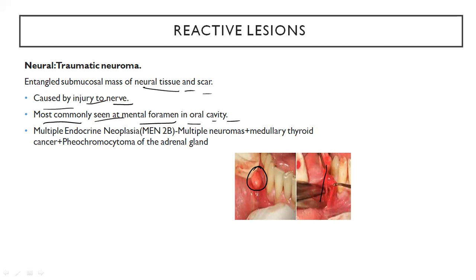What is multiple endocrine neoplasia? This is a type of condition where you see multiple neuromas along with medullary thyroid cancer and pheochromocytoma of the adrenal gland — all together constituting MEN.